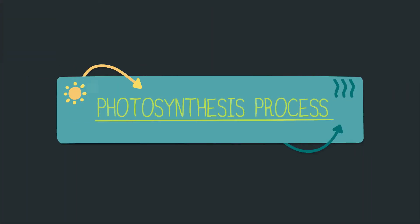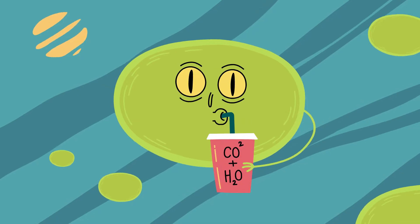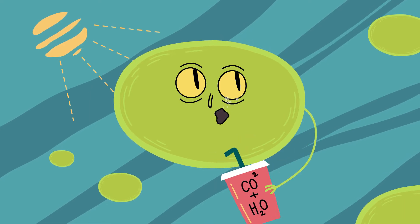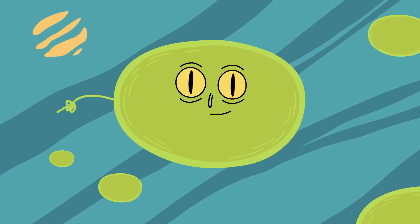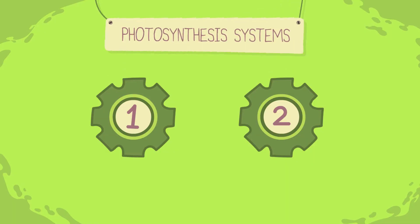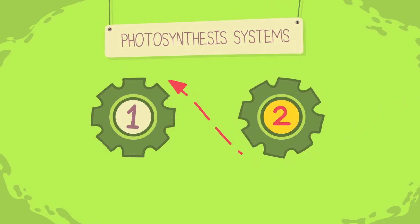In the photosynthesis process, carbon fixation and sunlight create sugars and oxygen, which is released into the atmosphere. This process involves two different systems that work in tandem, System 2 and System 1.